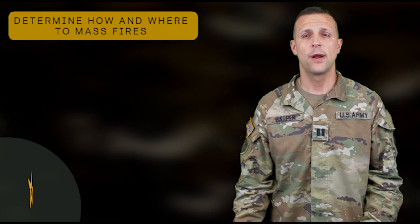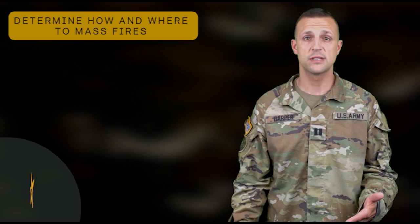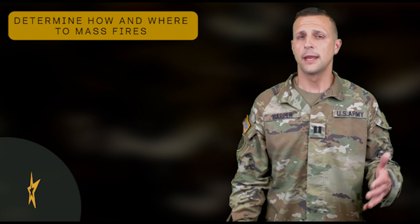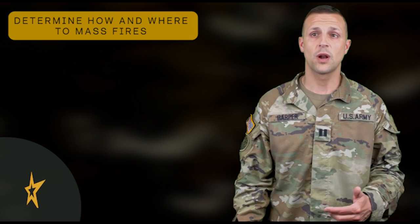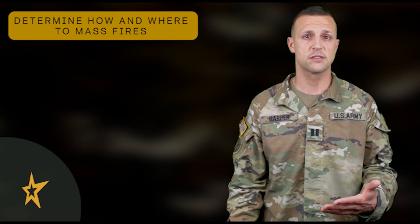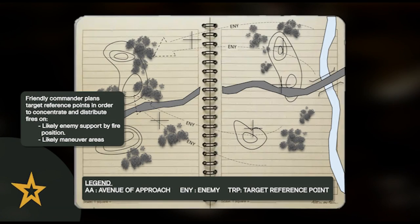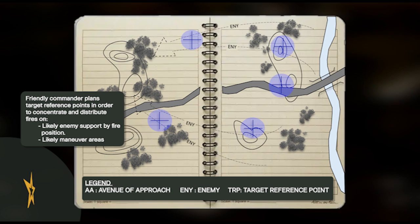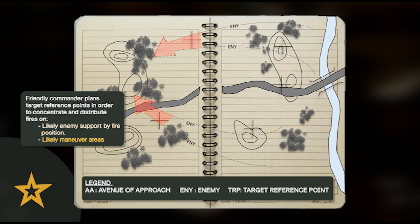Next, we determine how and where to mass fires. We have to mass the fires to achieve decisive effects. The commander will determine where to focus the fires based on the situation and the concept of the operation. Most often these are locations identified as probable enemy positions or points along likely avenues of approach where the company can mass fires. The commander will use TRPs to concentrate and distribute those fires on the enemy. We also want to consider likely support by fire positions and the maneuver areas for the enemy.